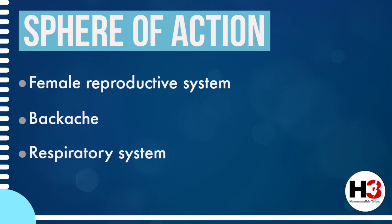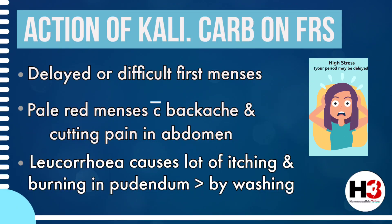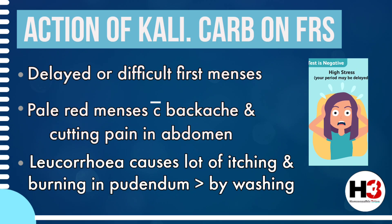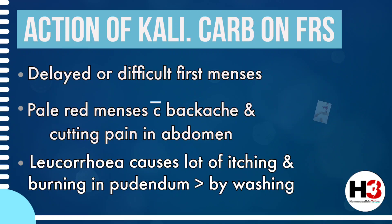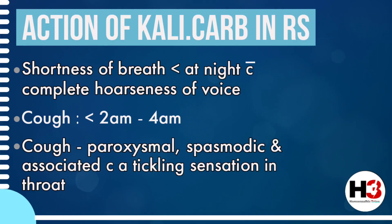Let's look at the action of Kali Carb on the female reproductive system. It is an excellent remedy for female complaints, especially for young girls who have delayed and difficult first menses. It acts really well where the female has pale red menses with constant backache or cutting pains in the abdomen as concomitants. Leukorrhea of Kali Carb females occurs with labour-like pains causing a lot of itching and burning in the pudendum, which is better by washing.